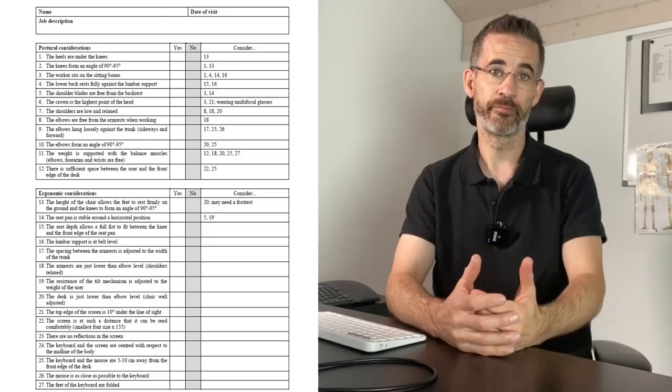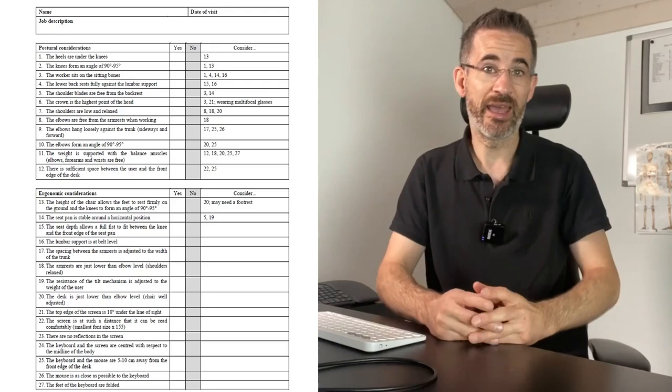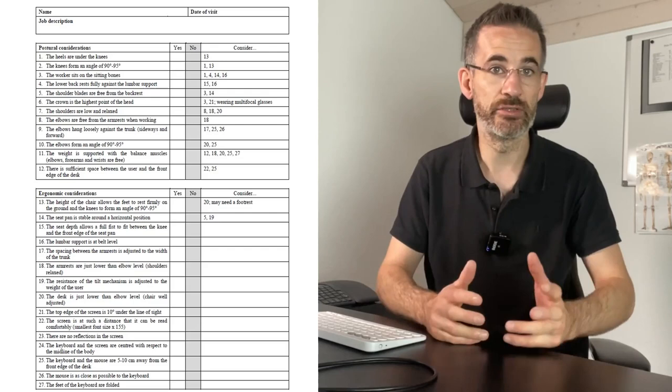The first part of the checklist is about posture. Therefore, this is about taking a picture of either you or your colleague and just seeing the angles. Are the heels under the knees? Are the knees around 90-95 degrees? Is the back supported? Your job is just to quickly go through a yes/no — it's purely observational. You don't try and understand why.